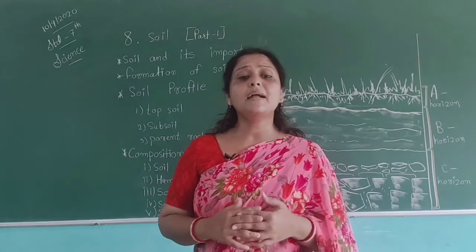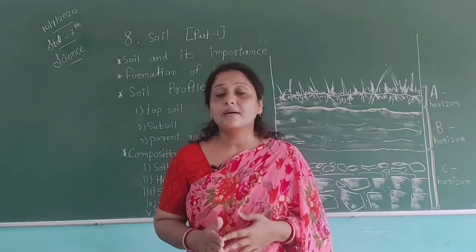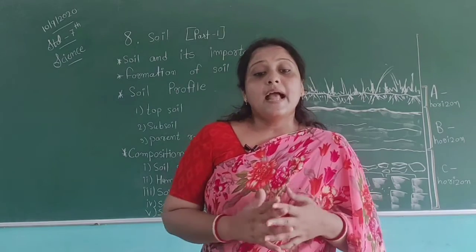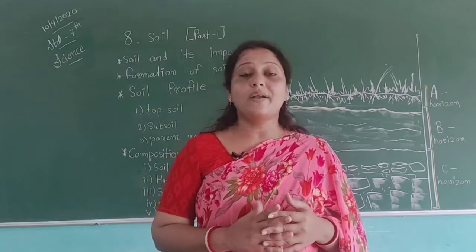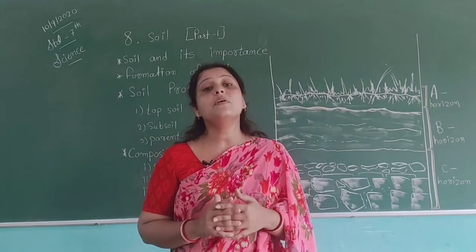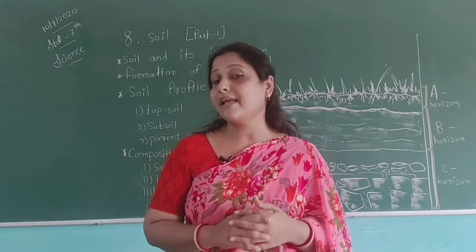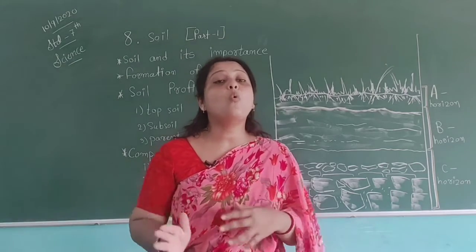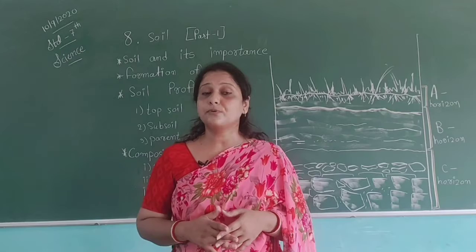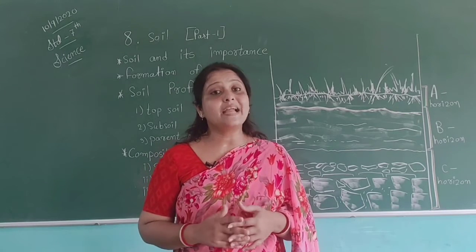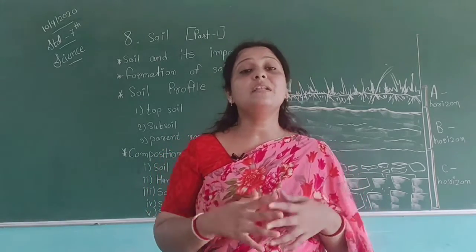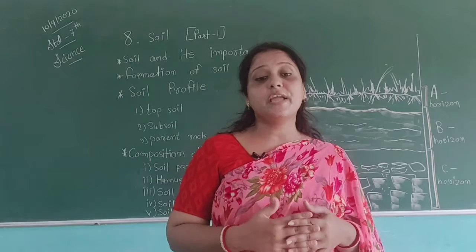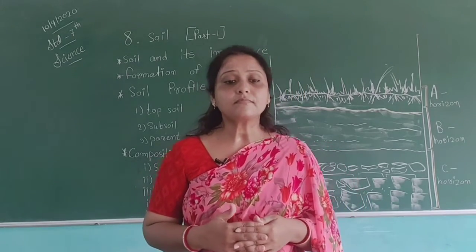All plants and trees need soil to grow. Soil helps the plants by holding their roots firmly and providing water and nutrients. Any type of plant that grows on land, the soil will provide water and nutrients. As we know about photosynthesis, plants make their own food using water, carbon dioxide, and sunlight — and they get water from the soil.